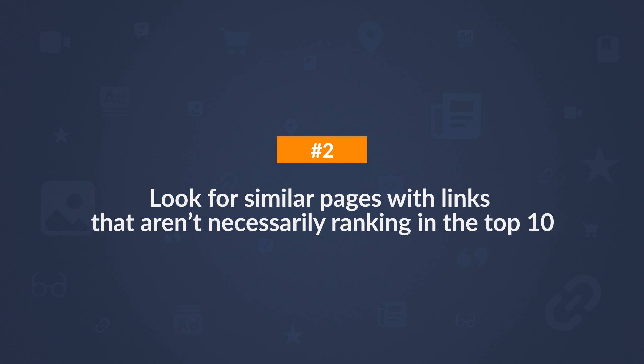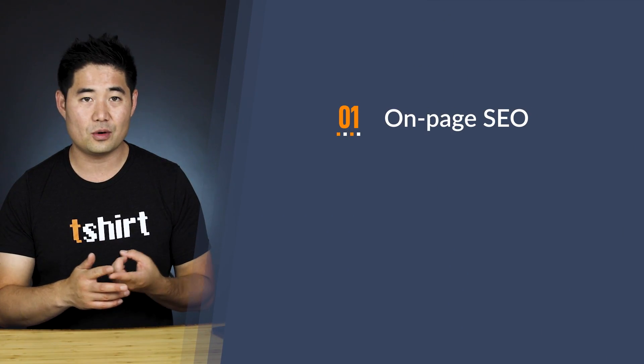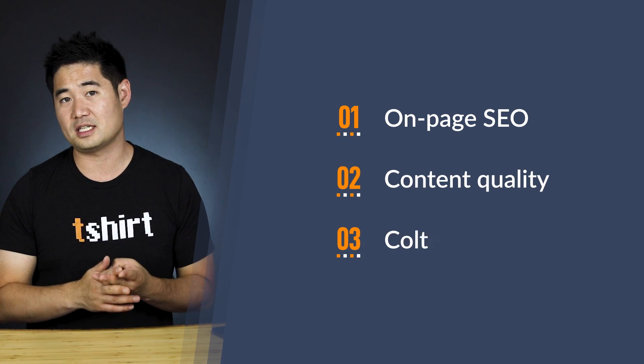The next tactic is to look for similar pages with links that aren't necessarily ranking in the top 10. Google's ranking algorithm is complex — just because you have more links, it doesn't mean you'll rank higher than competing pages. There are other elements that come into play like on-page SEO, quality of content, and content freshness. So instead of looking at just the top 10 ranking pages, we're going to look at all articles on the same topic that have links worth pursuing.